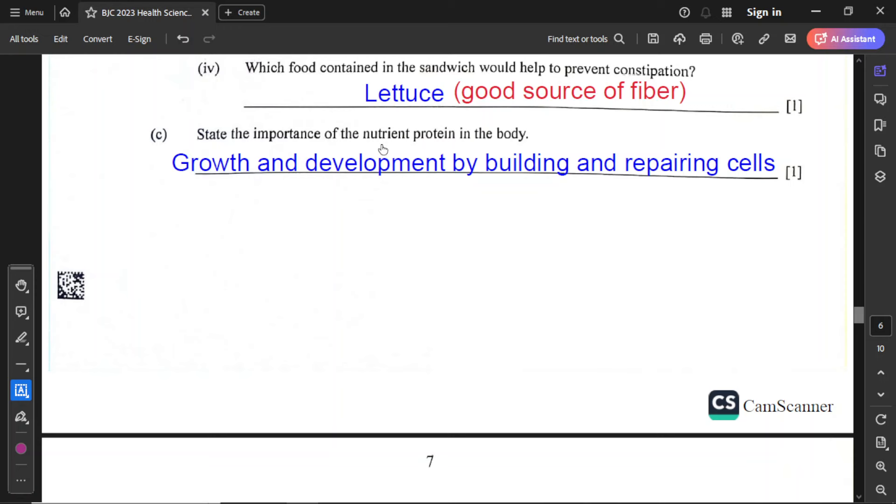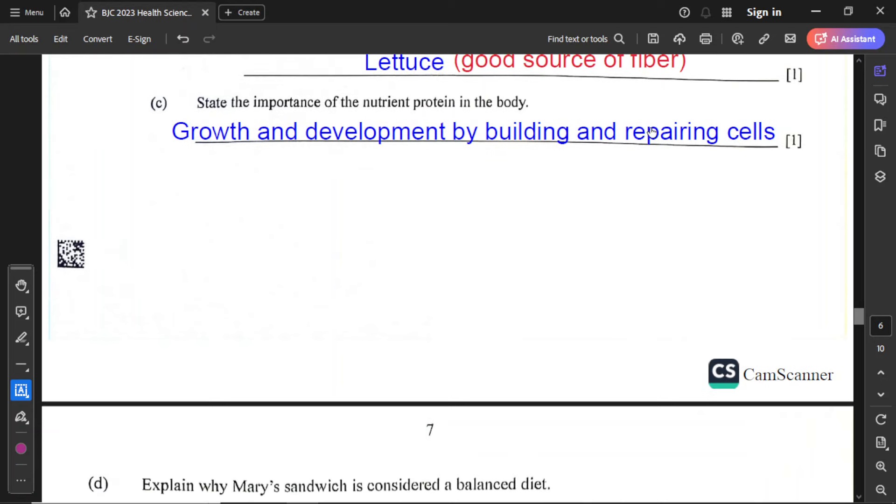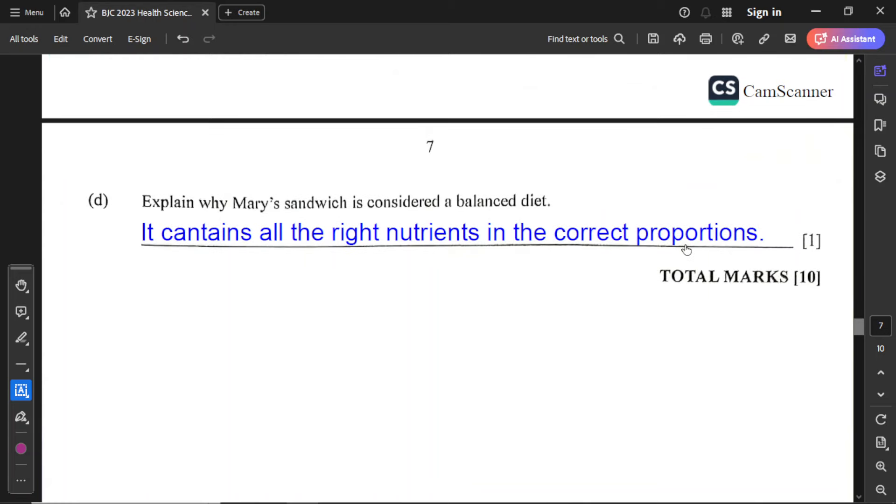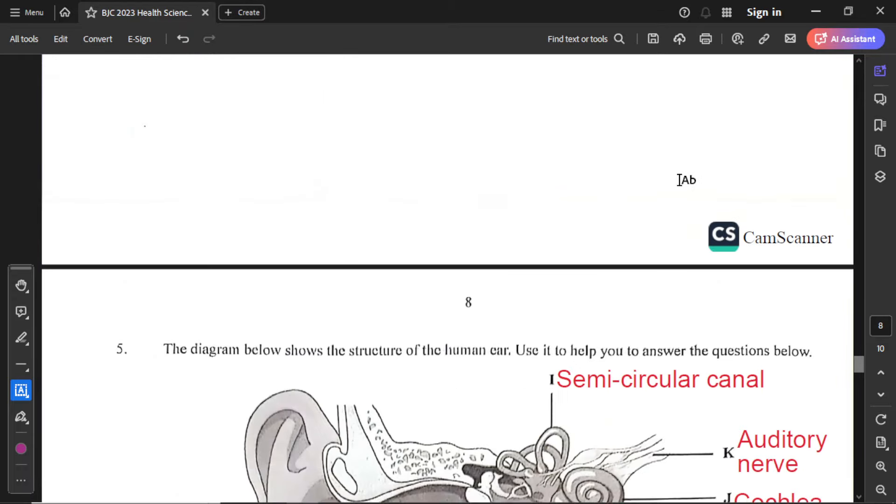Part C: state the importance of the nutrient protein in the body. Protein is for growth and development. How it helps with growth and development is by building and repairing cells. You have to make cells and repair cells to help with growth and development. The last part asks to explain why Mary's sandwich is considered a balanced diet. The reason it's considered a balanced diet is because it contains all the right nutrients in the correct proportions, and we're assuming that based on the values we see in the chart.